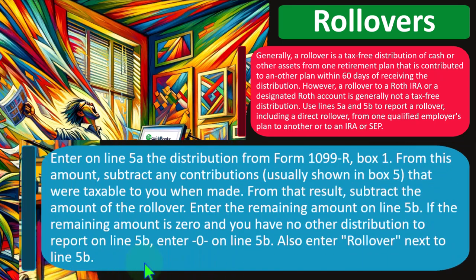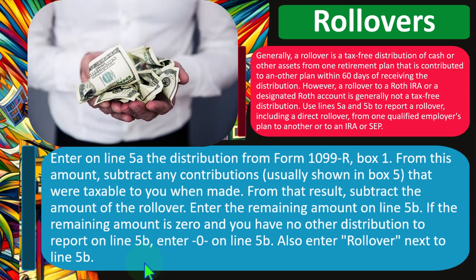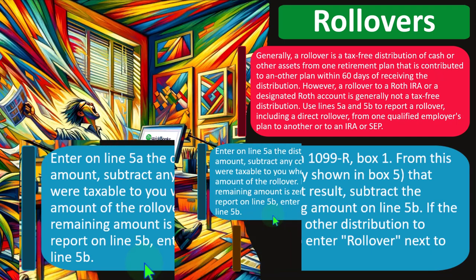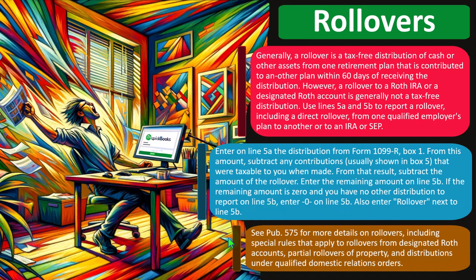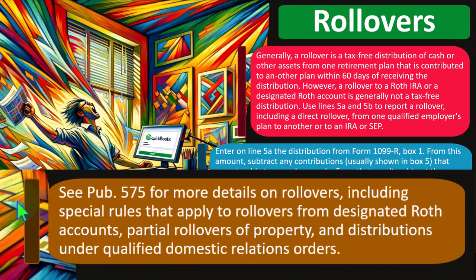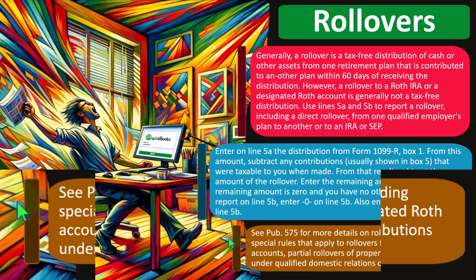Enter on line 5A the distribution from Form 1099-R Box 1. From this amount, subtract any contributions usually shown in Box 5 that were taxable to you when made. Then subtract the amount of the rollover and enter the remaining amount on line 5B. If the remaining amount is zero and you have no other distributions to report, enter zero. If the whole amount was rolled over, which is often the case, that result will be zero. See Publication 575 for more details on rollovers, including special rules for rollovers from designated Roth accounts, partial rollovers of property, and distributions under qualified domestic relation orders.